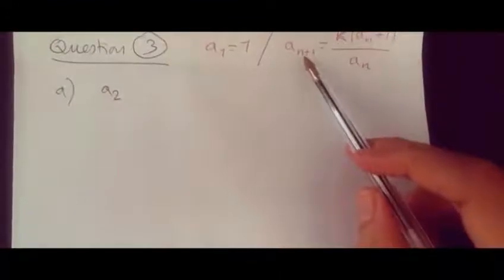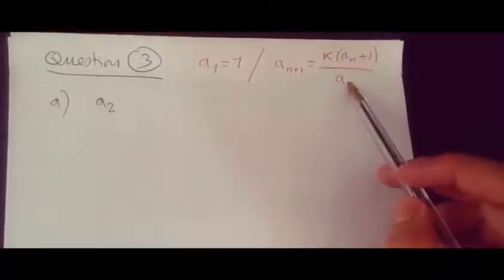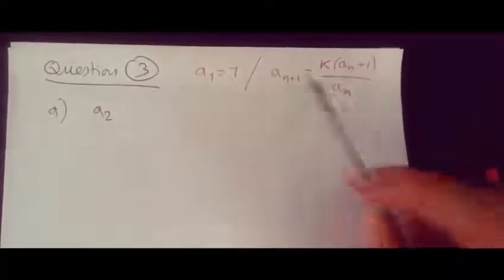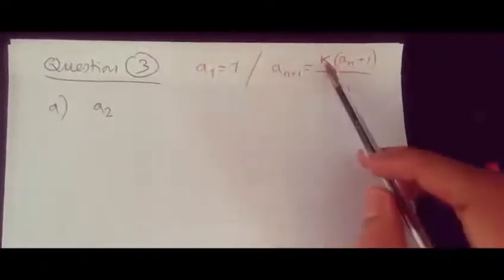Now here for part a, they tell us to find the value of a2 and a3. So to find a2, all we have to do is replace n with 1. So n is 1 here, n is 1, and n is 1. So for a1, we know a1 is 1, so k(1 + 1) over 1.